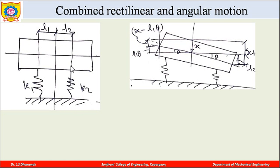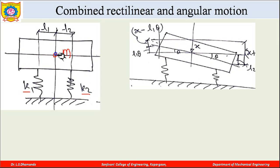Even though we consider that a single mass is there, the displacements are of two kinds. Consider a block supported on two springs with stiffness k1 and k2, and m is the mass of this particular block. The springs are located at distances l1 and l2 from the center of gravity (CG) of this mass.